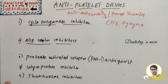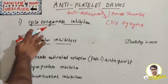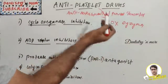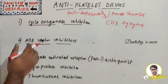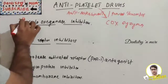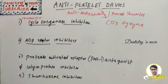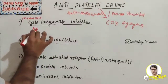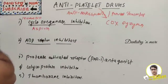Moving on to the classification. The first category is irreversible cyclooxygenase inhibitors — these inhibit the cyclooxygenase enzyme involved in prostaglandin and thromboxane production. The most common ones are aspirin and trifluosal.